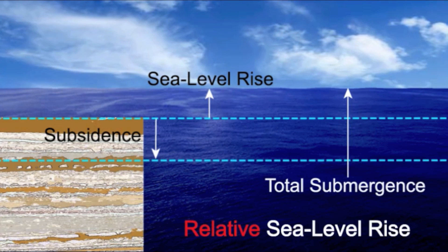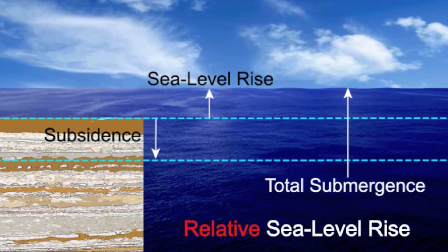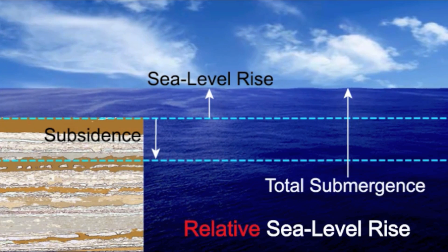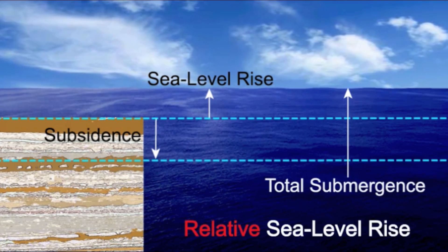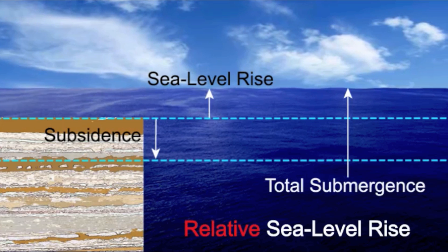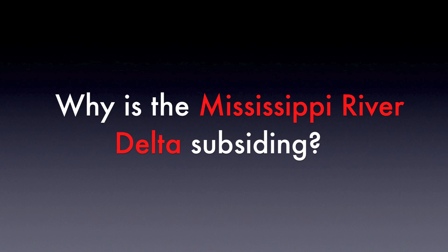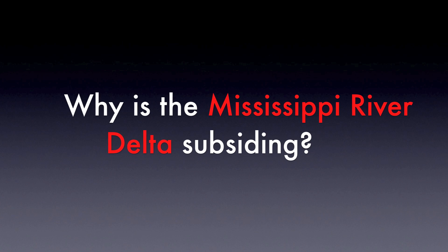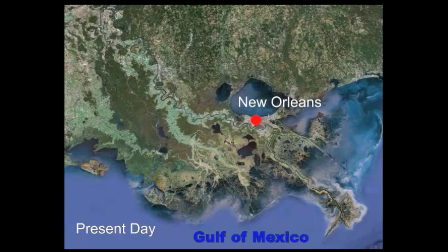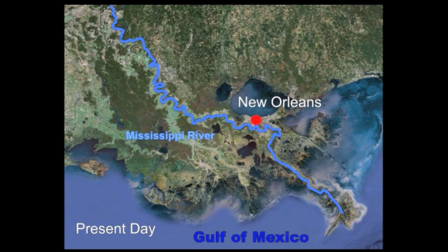The combination of the two processes determines the rate of submergence in each coastal area. The Louisiana coast is a dynamic system built in part by the action of the Mississippi River.